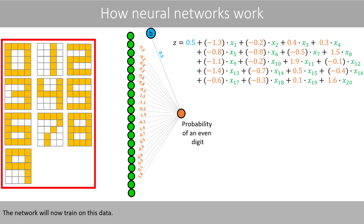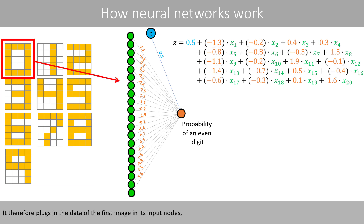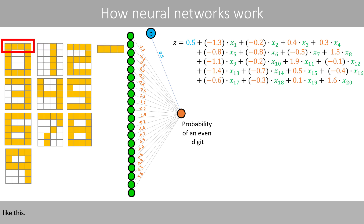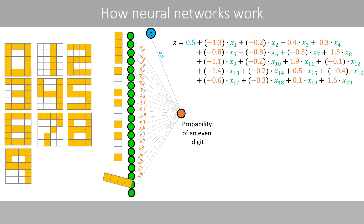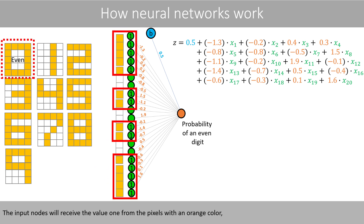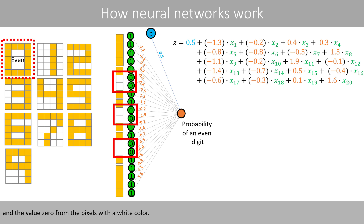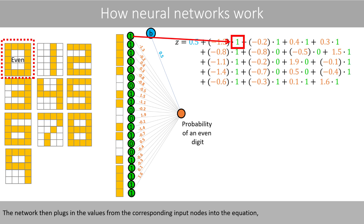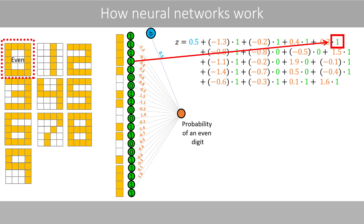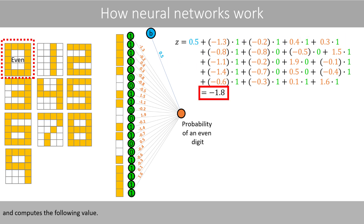The network will now train on this data. It therefore plugs in the data of the first image into its input nodes. The input nodes will receive the value 1 from the pixels with an orange color, and the value 0 from the pixels with a white color. The network then plugs in the values from the corresponding input nodes into the equation, and computes the following value.